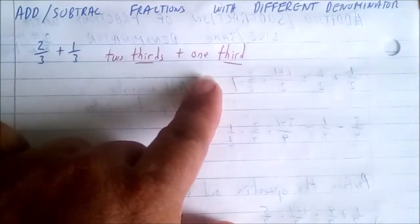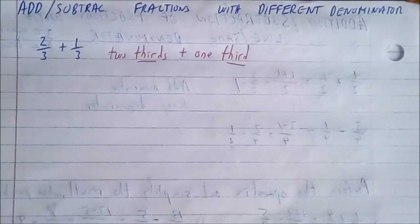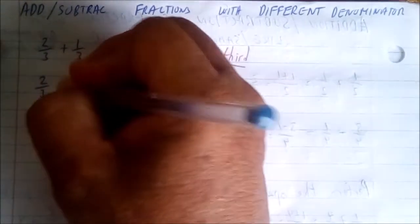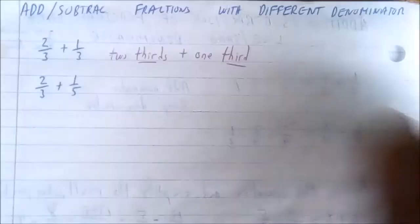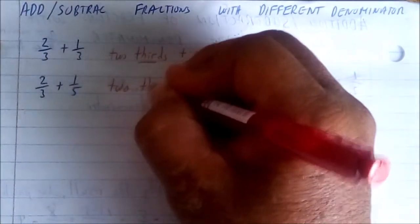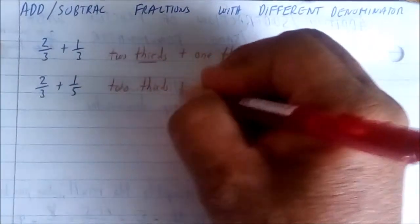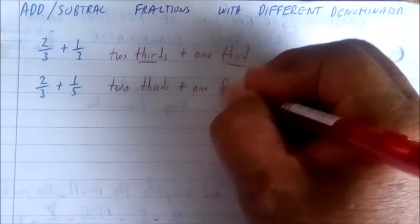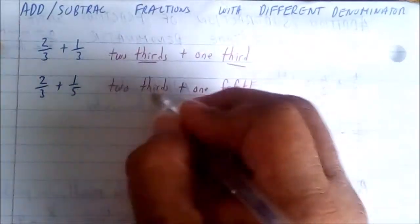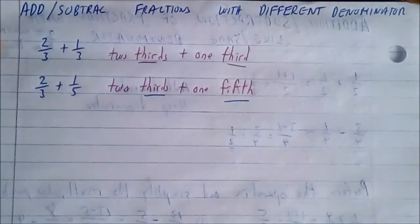Now if I was to have two thirds plus one over five, then it reads as two thirds plus one fifth. Notice fifth and thirds, they are not the same.